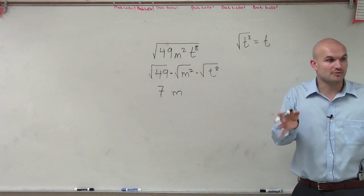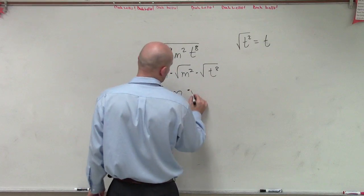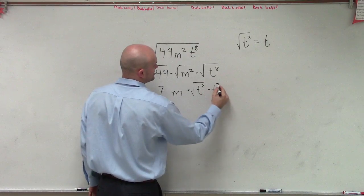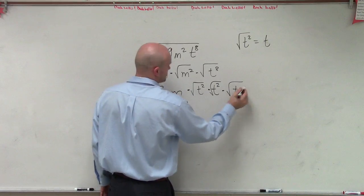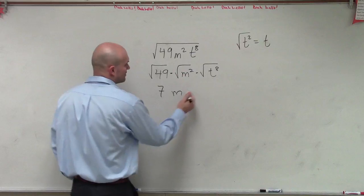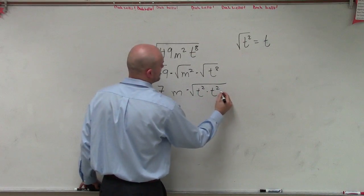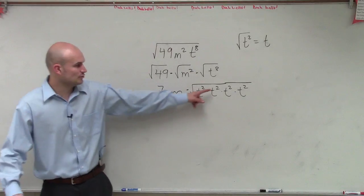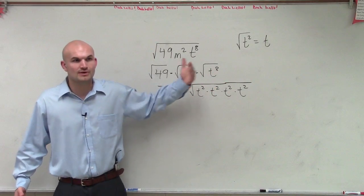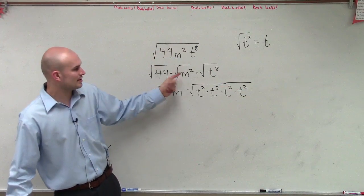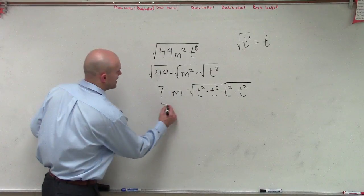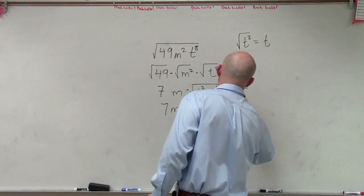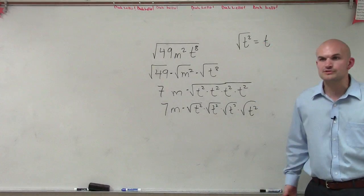Remember, when you multiply variables with exponents, you add the exponents. So I could rewrite this by using the product rule of radicals. I can rewrite this as the square root of t squared times t squared times t squared times t squared. Does everybody agree with that? That is equal to t to the eighth, because when you multiply with exponents you add the exponents. Then, just like here how I split it up, I can split all of these up. So this could be 7m times the square root of t squared times the square root of t squared times the square root of t squared times the square root of t squared. You guys don't have to show all of this work, but I'm showing it so you understand.